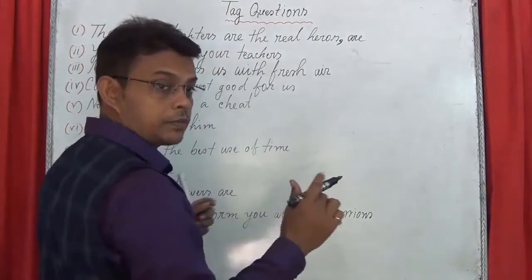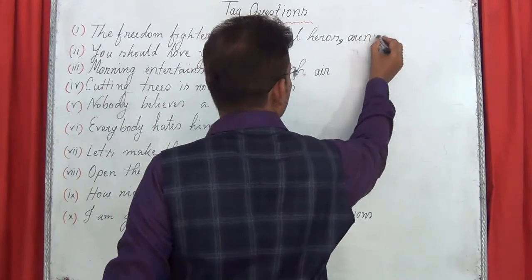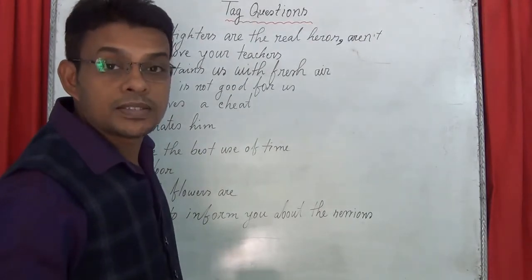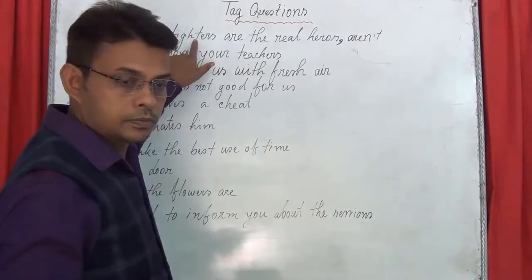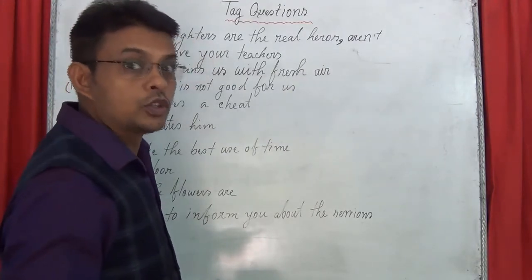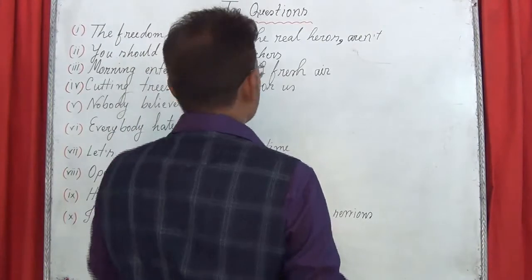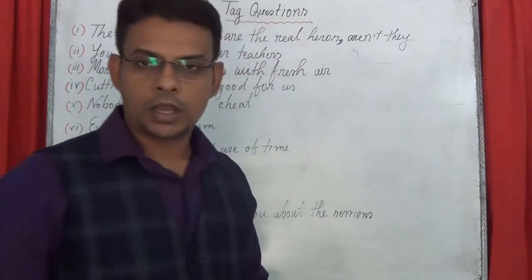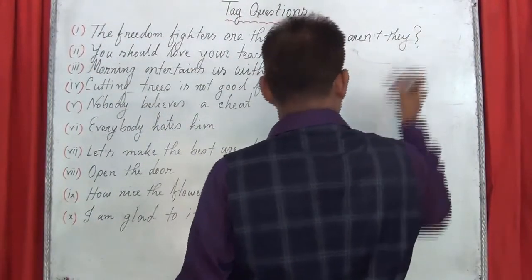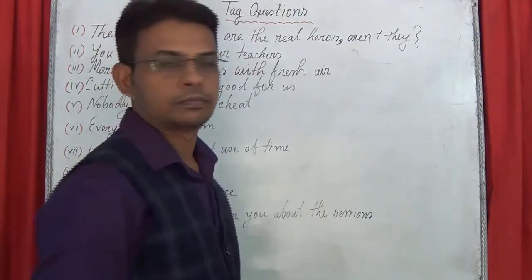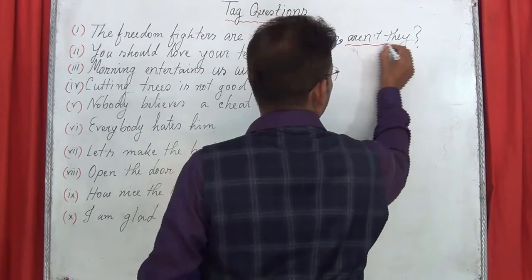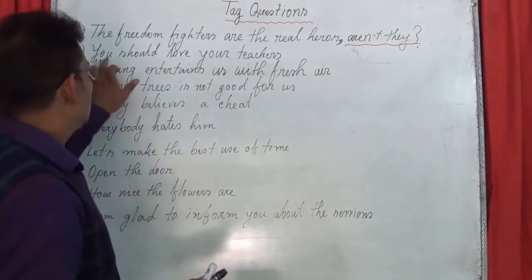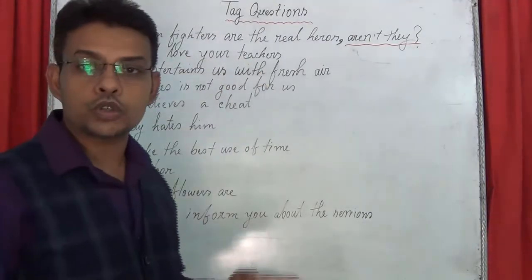The sentence structure is: comma, then auxiliary, then subject. You have to think about the subject of the statement. The subject 'freedom fighters' is a noun, so you have to use the pronoun. The pronoun for 'freedom fighters' is 'they.' At last, you have to use a question mark. So the tag question is: 'aren't they?' Now the next statement: 'You should love your teachers.'